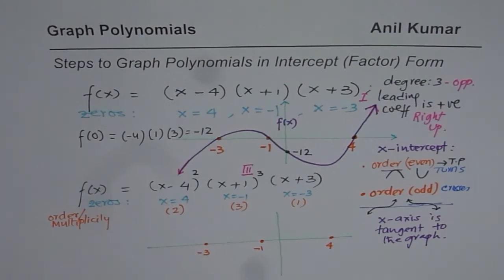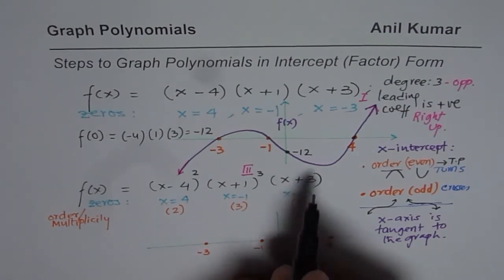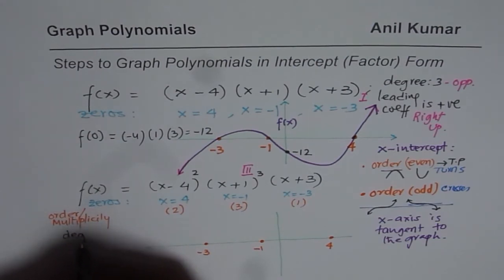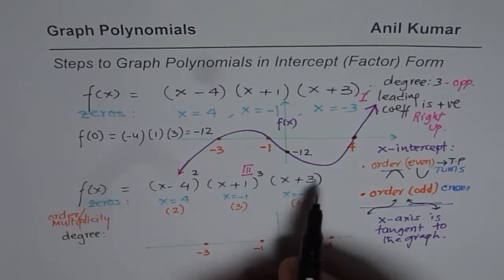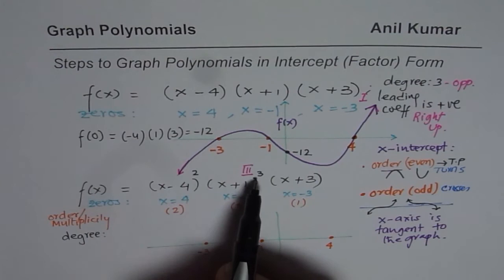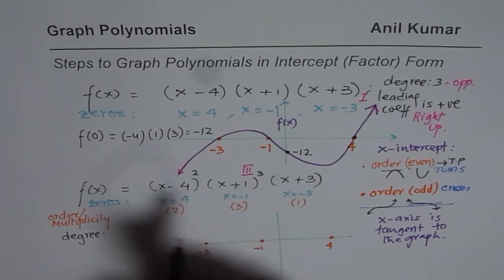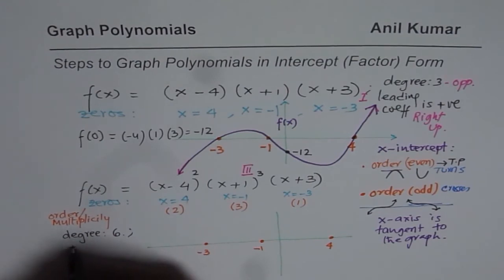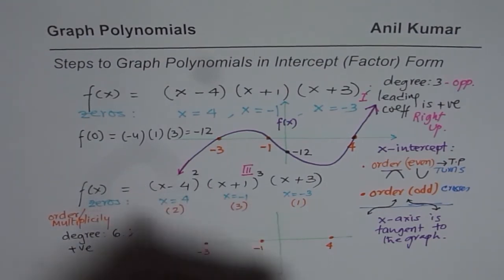So what is the degree now? So let me write down the degree here. So degree for this particular function is 2 plus 3, 5 plus 1, 6. Degree is 6 and leading coefficient is positive. So positive, we did not change that part. So positive leading coefficient.